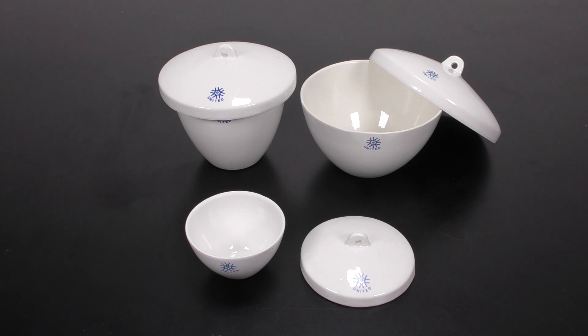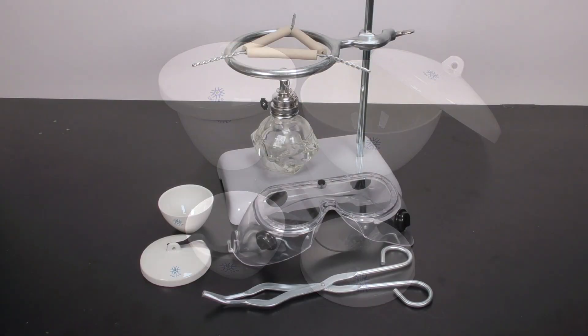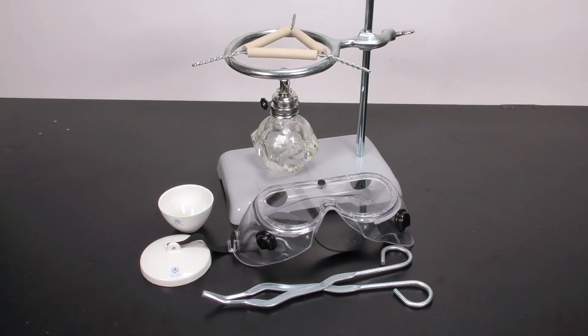These come in a variety of different sizes. In order to use a crucible safely, you need some other materials as well. You'll need a support stand, a clay triangle, a support ring, a burner of some type, crucible tongs, and safety glasses.